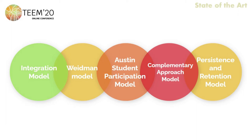Bean's model proposes that the socialization of undergraduate students is largely related to the psychological and social structural factors of the student. Austin Student Participation Model: this model has some factors that can make the student reach the fulfillment of his or her academic objectives.